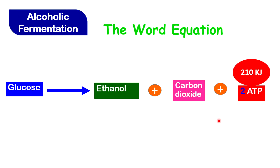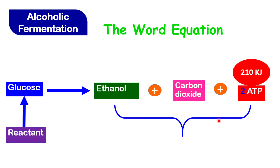Two ATP molecules is equivalent to approximately 210 kilojoules of energy. In this case there is only one reactant, and we have the products. The waste products from this type of respiration are ethanol and carbon dioxide, and the organism will try to get rid of those two byproducts, because the main product for any respiration is energy.